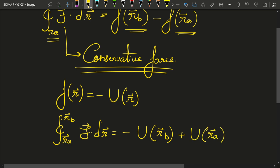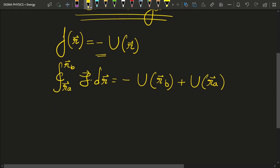Now you might wonder why I have assigned this minus sign to it. I could simply call F of R equal to U of R. That would be clear in a moment, so keep watching.